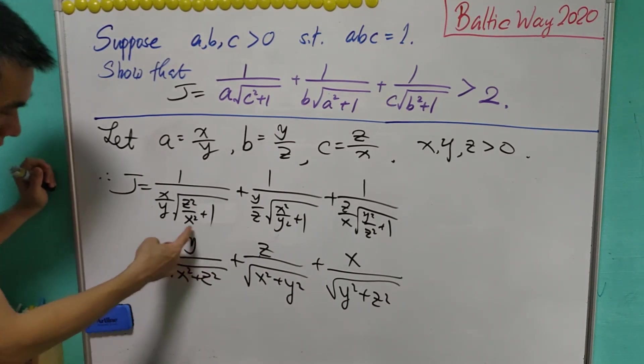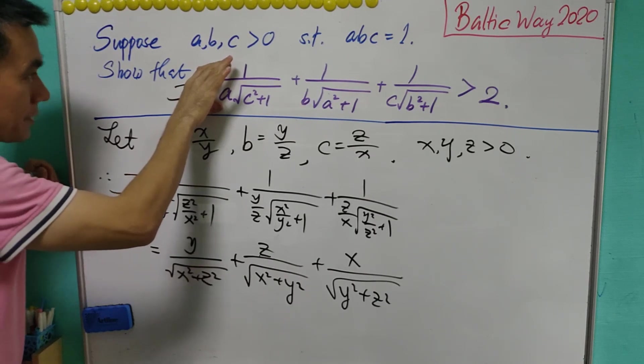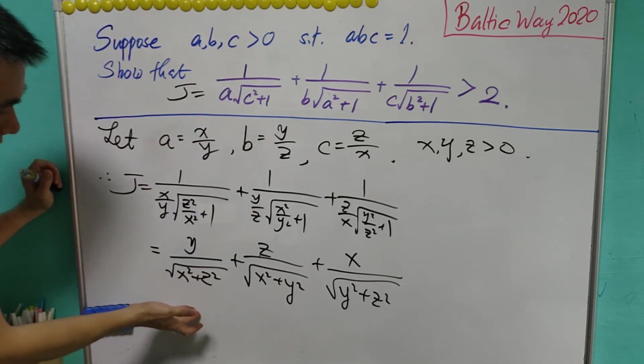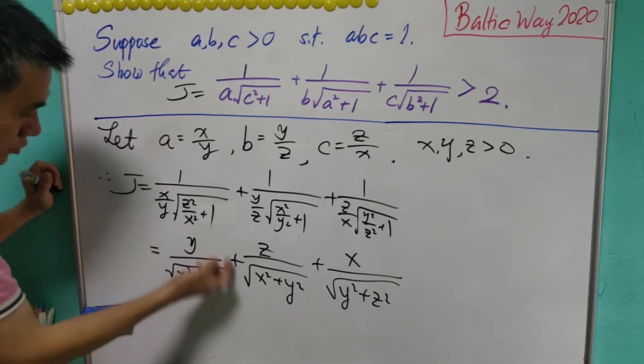Now we transform the expression in terms of a, b, c to x, y, z. And we are now going to use the AM-GM inequality to solve this question.